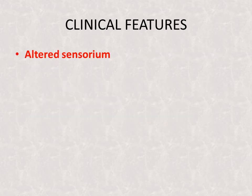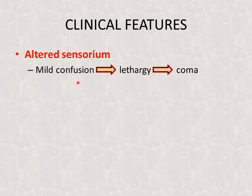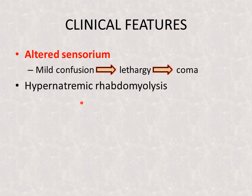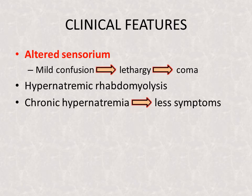Clinical features: there can be altered sensorium with a spectrum ranging from mild confusion to lethargy, and this can further progress to coma. There may also be coexistence of rhabdomyolysis. In patients with chronic hypernatremia, they tend to have fewer symptoms.